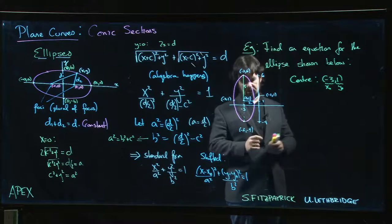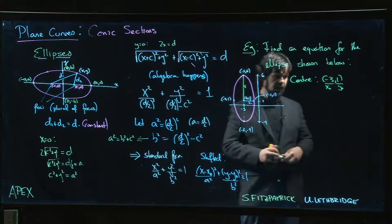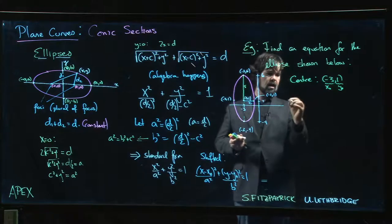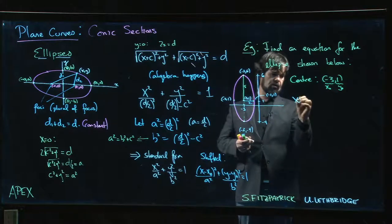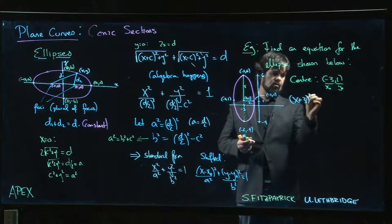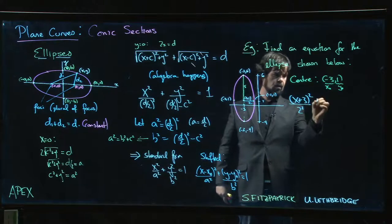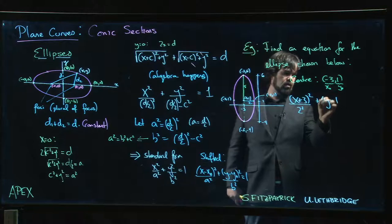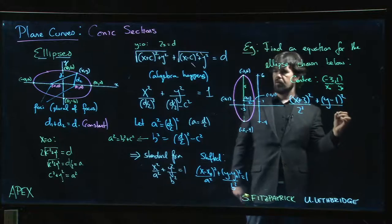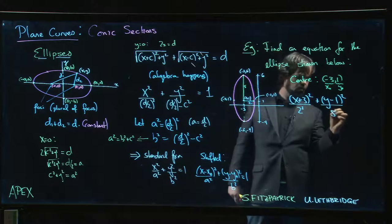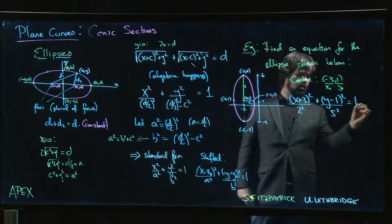So putting it all together, we have x minus minus 3, so x plus 3 squared over 2 squared, and then we have y minus 1 squared over 5 squared, and that should equal 1.